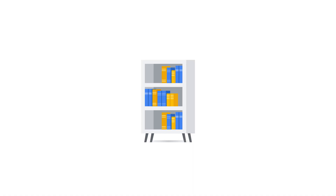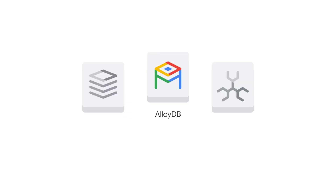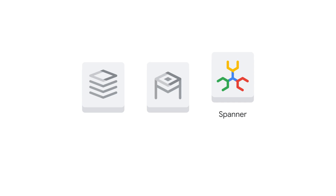You can think of relational databases as a well-organized library. All your data is neatly categorized into tables like books on shelves, and you can easily find what you need using SQL, which is like the library's catalog. Google Cloud relational database offerings include Cloud SQL, AlloyDB, and Spanner.